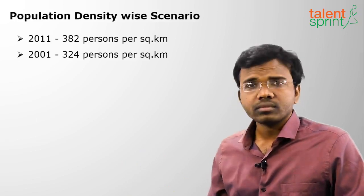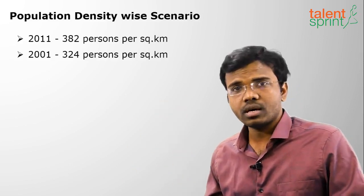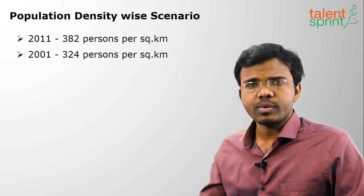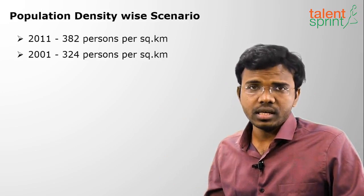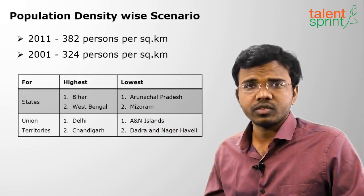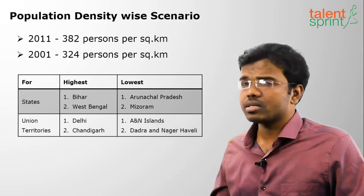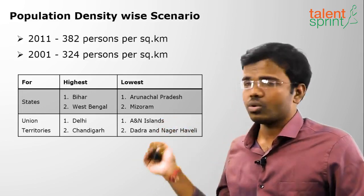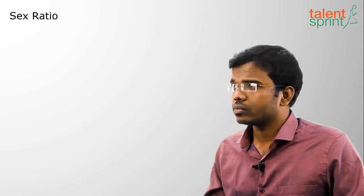Population density in 2011 is 382 people per square kilometer, compared to 324 in 2001. As population increases and area remains constant, density also increases. Highest density states are Bihar and West Bengal occupying first and second. Delhi and Chandigarh are first and second highest among UTs. Lowest density state is Arunachal Pradesh and second lowest is Mizoram. Among UTs, Andaman and Nicobar Islands is lowest and Dadra and Nagar Haveli is second lowest.